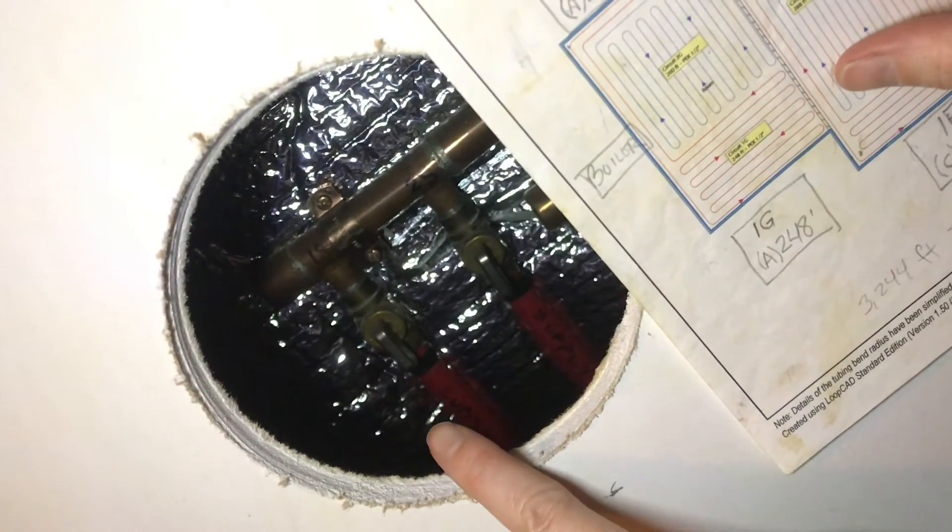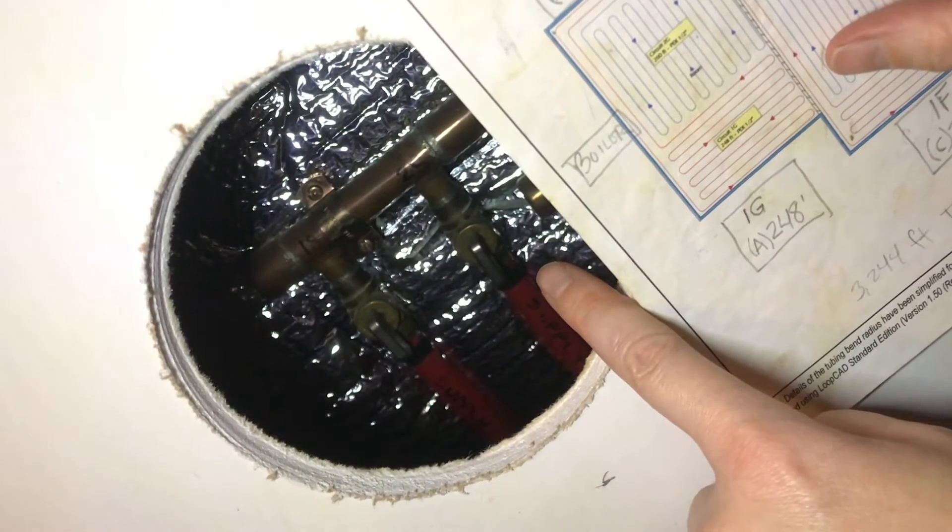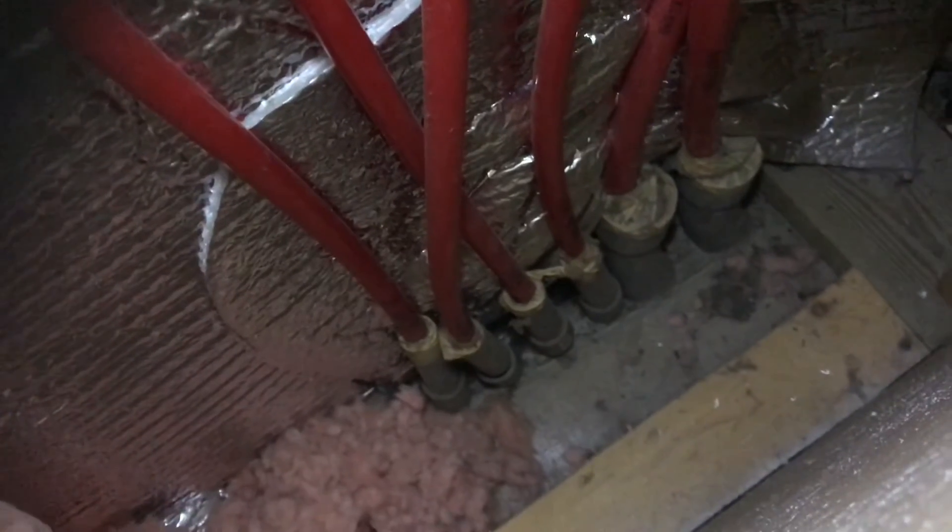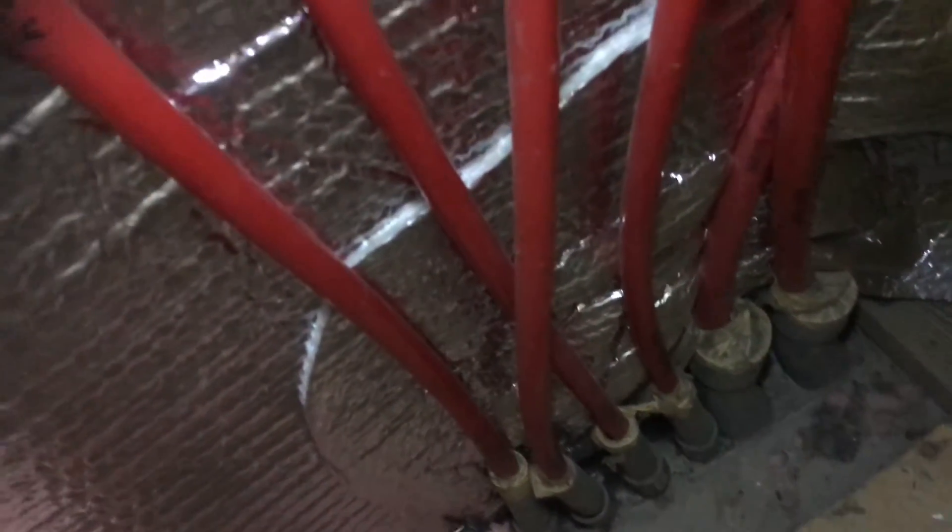So the front room is labeled one, the back room is labeled number two. We are turning off loop number two. Now the concrete holds heat for so long it may take a day or two before we see a change in the air of the room.